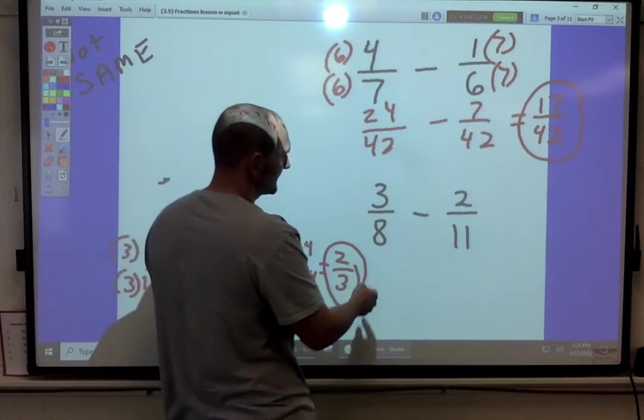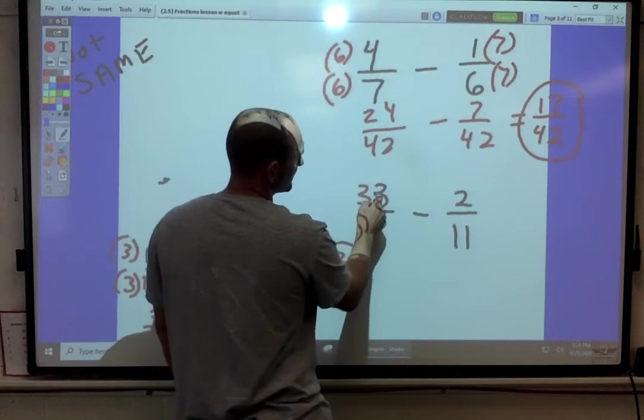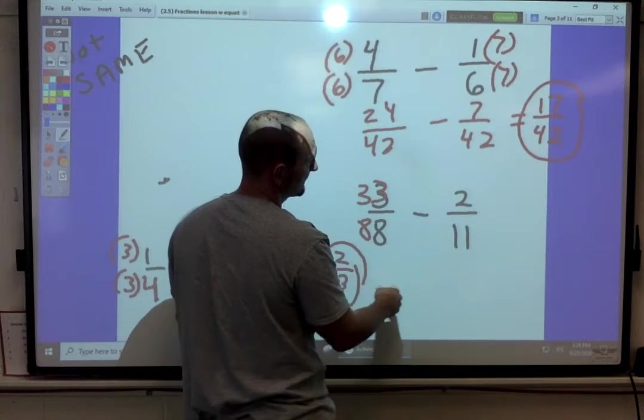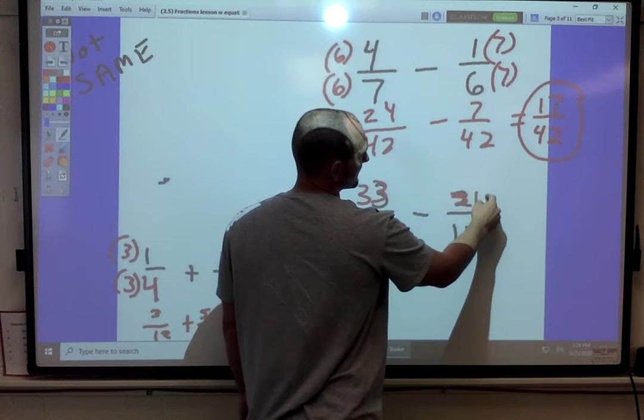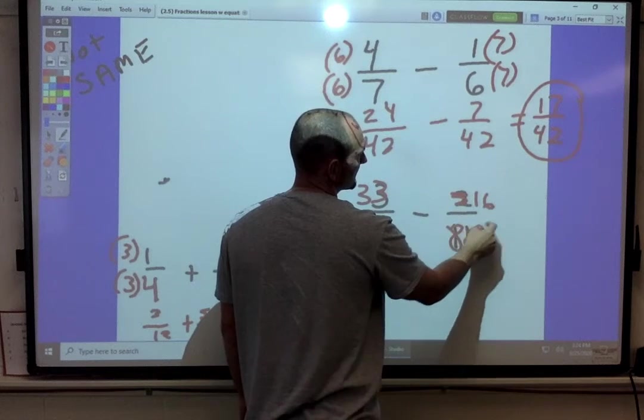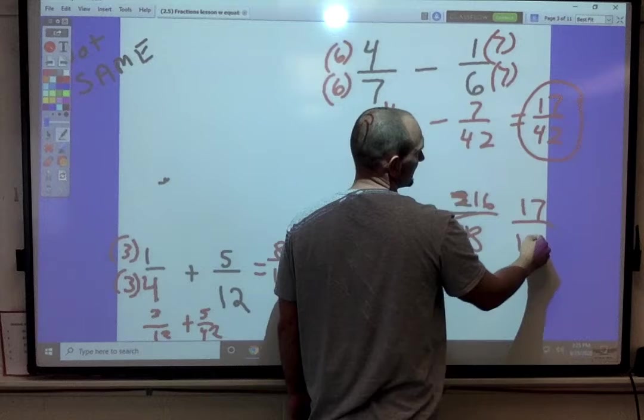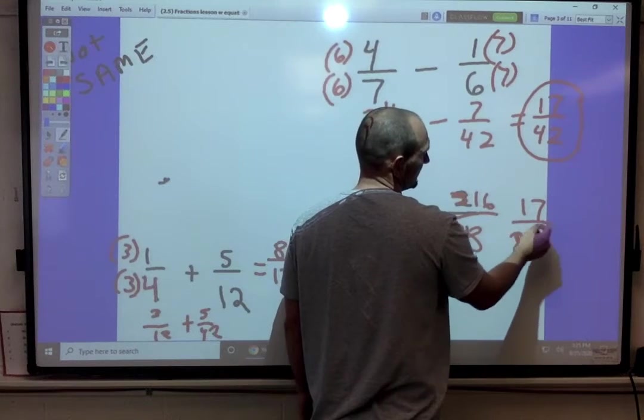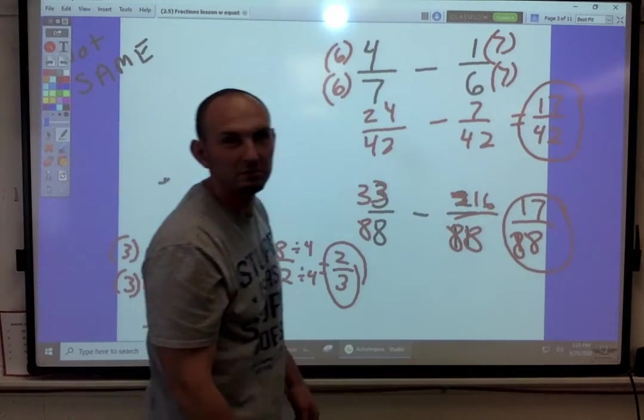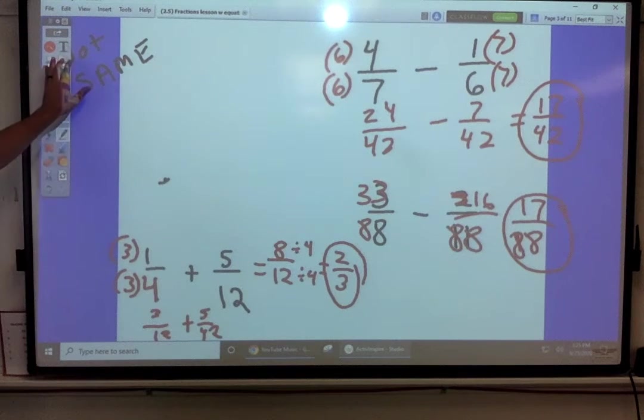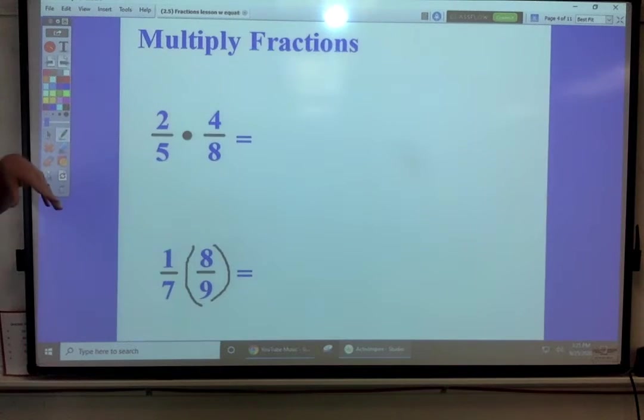Here, same thing. We'll go by elevens. That's going to be thirty-three and eighty-eight. That's going to become sixteen and eighty-eight. Thirty-three minus sixteen is seventeen. Seventeen eighty-eighths. Hopefully, that's useful with the fractions, adding, subtracting.